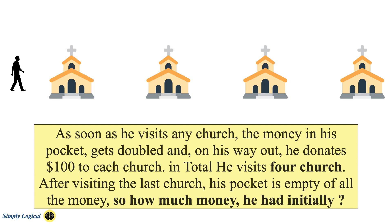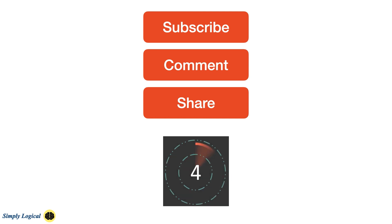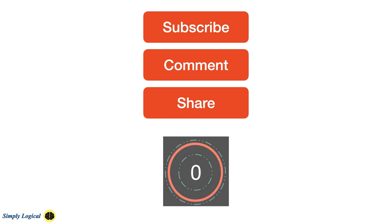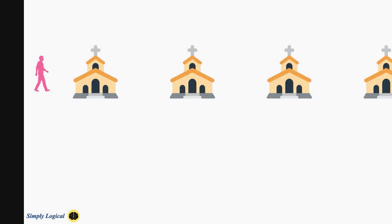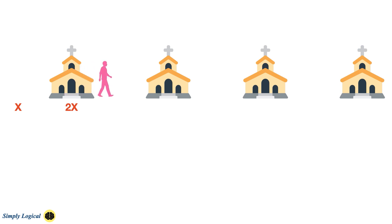The question is, how much money did he have initially? Let me explain the solution now. Let's assume the person began his quest with X dollars. In the first church, as soon as he enters, his money is doubled to 2x. On his way out, he donates $100. Therefore, he is left with 2x minus $100.